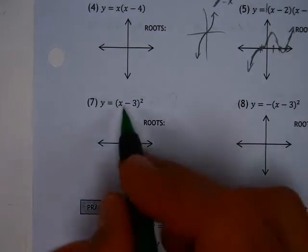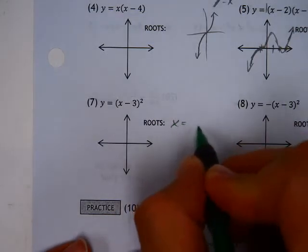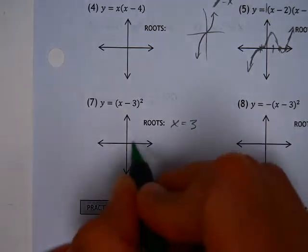Look at this bottom row completely, just because I think we can do it quickly. There's a single root. Well, it's not a single root, it's a double root actually, but it's one place where it hits the x-axis at x equals 3.